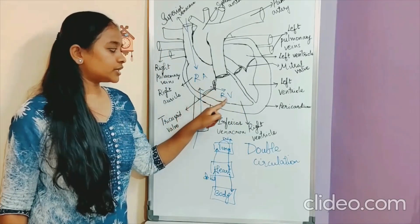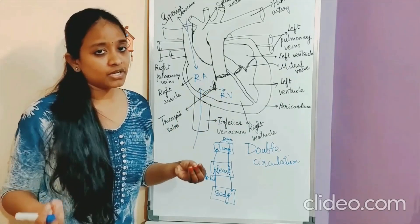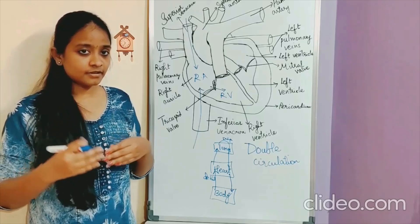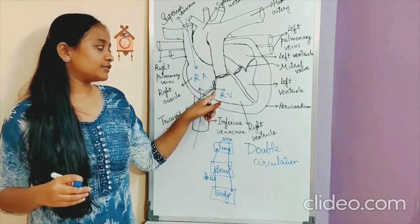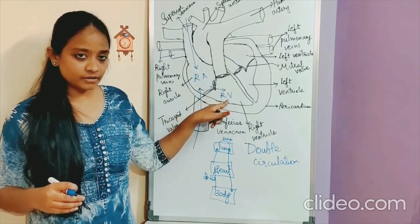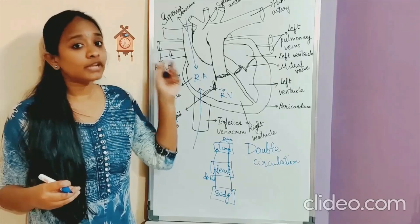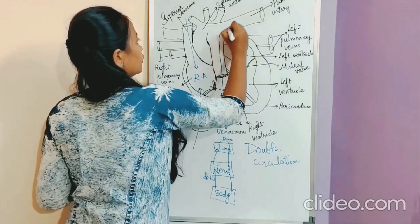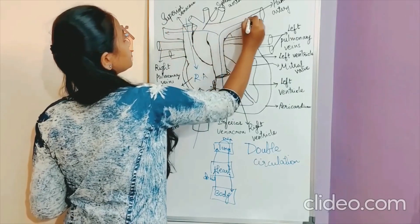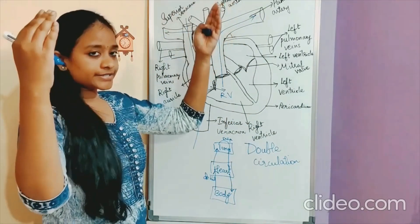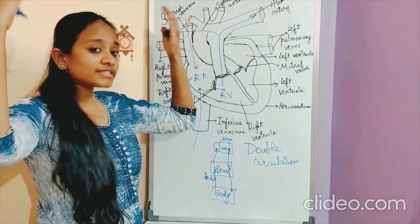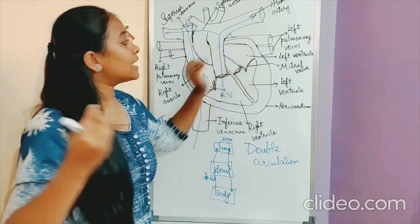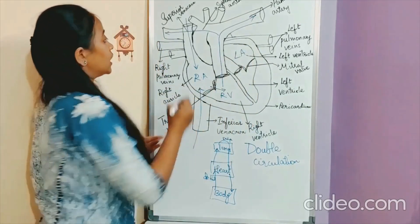Between the right auricle and right ventricle there is a valve called the tricuspid valve. It is called tricuspid because it has three cusps — three flaps. From the right ventricle, the deoxygenated blood is sent to the lungs through the pulmonary artery, going to both the right and left lungs. In the lungs, the exchange of gases takes place, and the oxygenated blood from the lungs is brought back to the heart — specifically to the left auricle — through the pulmonary veins.